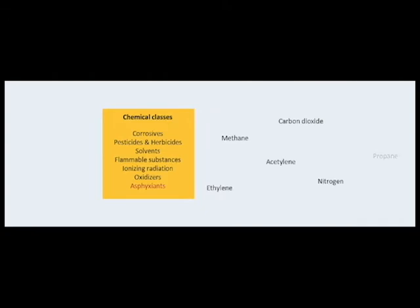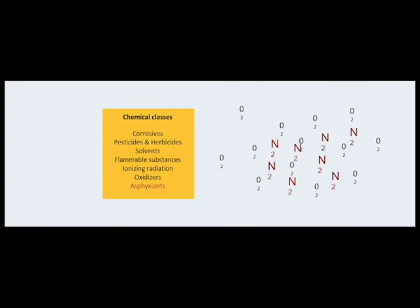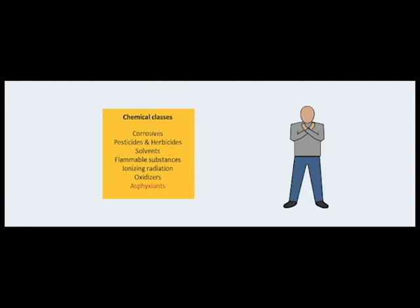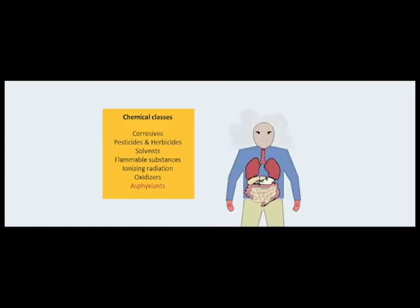Asphyxiants are agents that displace oxygen or prevent cells from using oxygen. Simple asphyxiants are gases that, when present in high concentrations, lead to a reduction in available oxygen. Atmospheres deficient in oxygen do not provide adequate sensory warning, and most simple asphyxiants are odorless. Unconsciousness and death can rapidly ensue. There have been many asphyxiation deaths among inappropriately protected workers entering confined spaces before adequate venting or gas testing. Examples include propane, methane, argon, and helium.